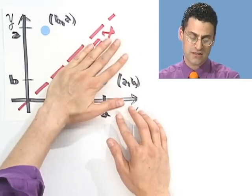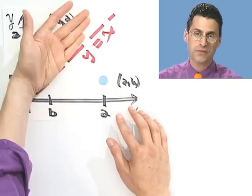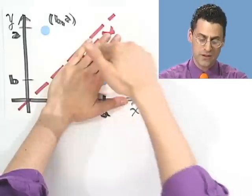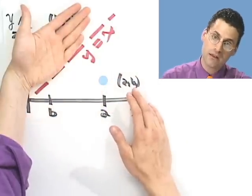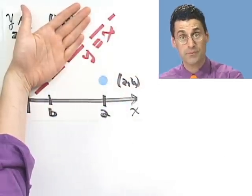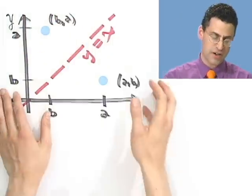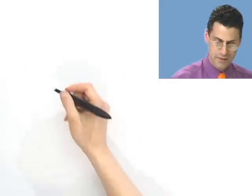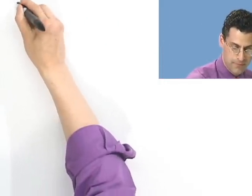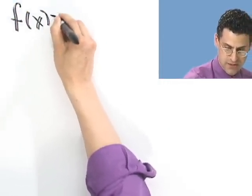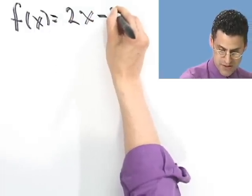So for two things to be inverse functions, they have to have a symmetry over this flip. Whatever you do with the first function, if you flip it, you should get the second function. So that's the way to test. So let's just try an example here and see that in action.